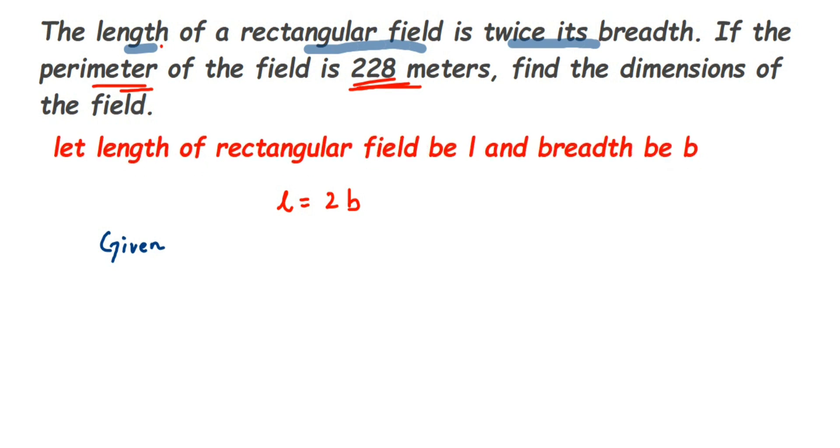We know perimeter of rectangle, it's 2 into L plus B, right? So perimeter is 228, it's given in the question, but what is the formula here? It's 2 into L plus B is equal to perimeter. We know P value, it's 228 given in the question.